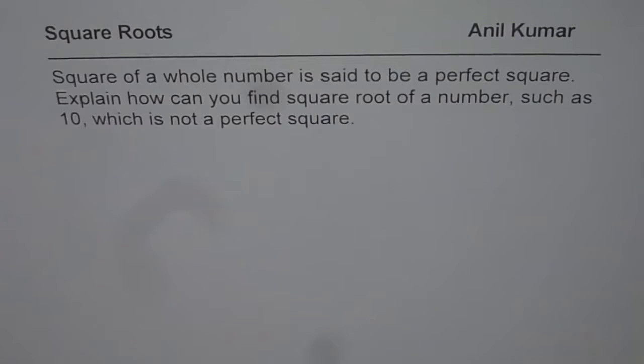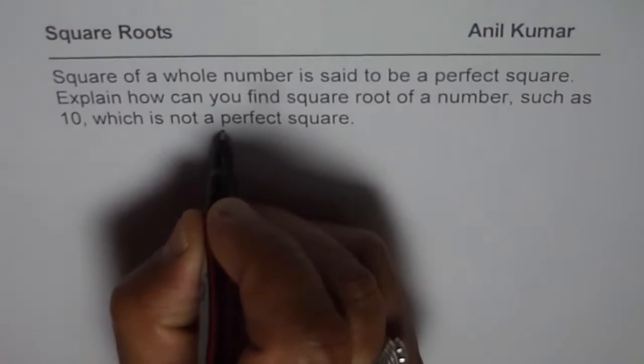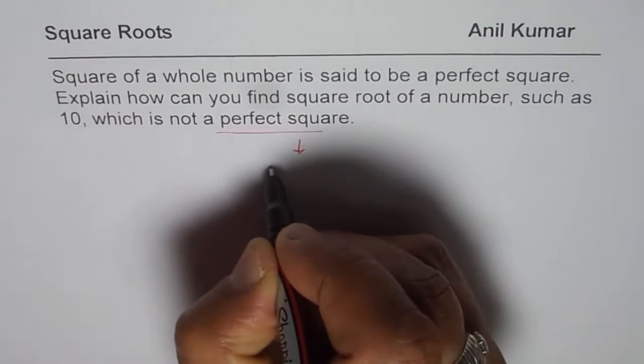So if you have a number which is not a perfect square, then finding its square root results into decimal numbers. So that means we are looking into decimal numbers.